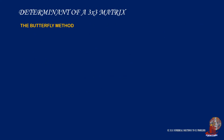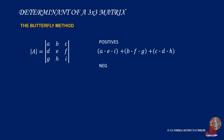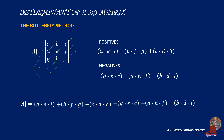The butterfly method is much shorter than Laplace expansion, though it may be trickier. It is done using diagonals but considers all elements. Take the positives as diagonals going down: A times E times I, plus B times F times G, and C times H times D. Take the negatives from the opposite diagonals: G times E times C, A times H times F, and B times D times I. The determinant is the sum of the positives minus the negatives.